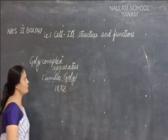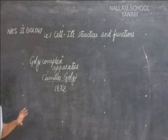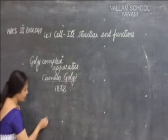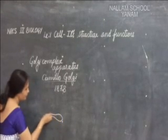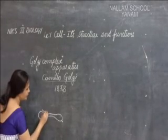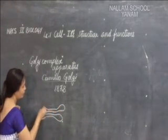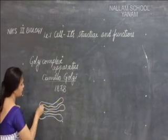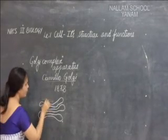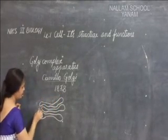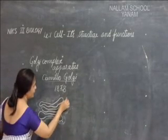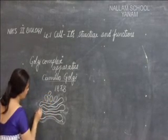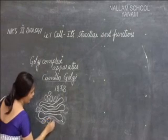What is its function? Let us first see how it looks, because once we understand its structure, we can easily understand its function. It looks like a stack-like structure — imagine sacks stacked one upon the other. It has fluid around it connecting these stack-like structures, and you also notice some vesicles around the Golgi apparatus.